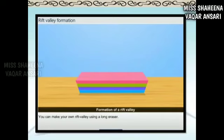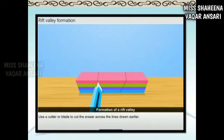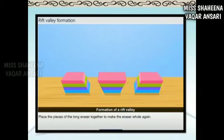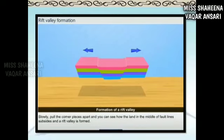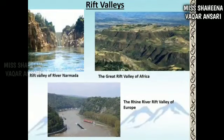You can make your own rift valley using an eraser. Take a long eraser, draw fault lines on it with a pencil, and use a cutter or blade to cut across the lines drawn. Place the pieces together to remake the whole eraser, apply a little pressure on the corner pieces, and lift the whole eraser above the table slowly — a valley is formed. Examples of rift valleys include the Rift Valley of the River Narmada, the Great Rift Valley of Africa, and the Rhine River Rift Valley of Europe.